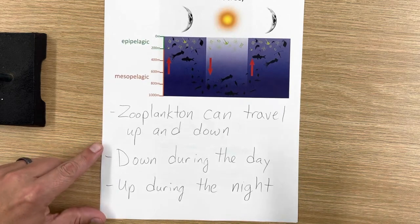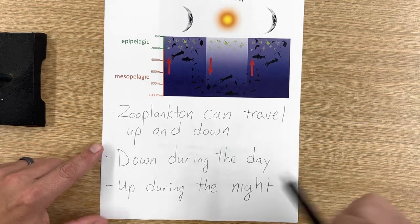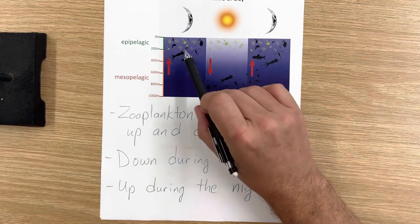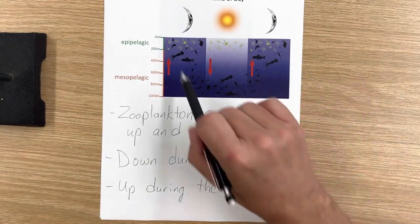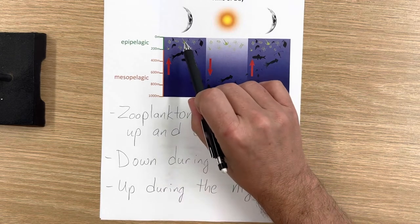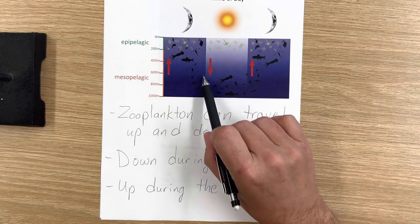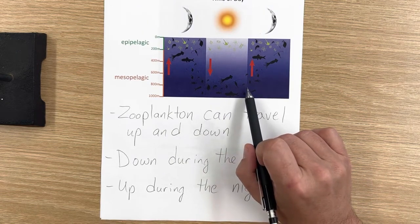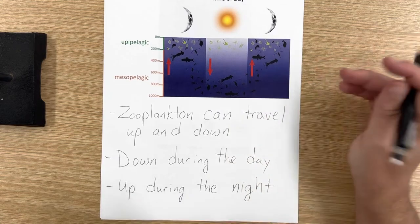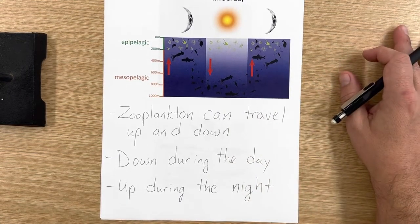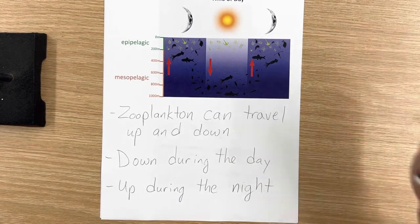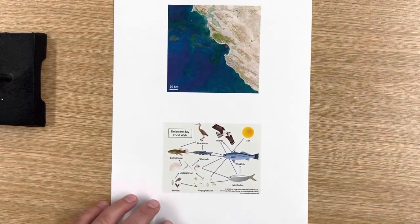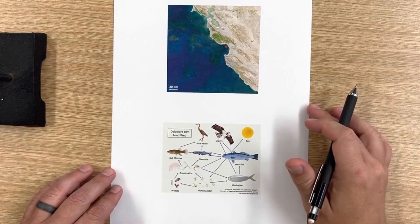So the question is, why do zooplankton do that? Phytoplankton basically stay up here, with some little exceptions. But zooplankton do this migration at night. They're up at the top, and then when day starts to come in the early morning, they go down. And when it becomes evening time again and the sun's gone down, they travel up again. So why? There's two main reasons.